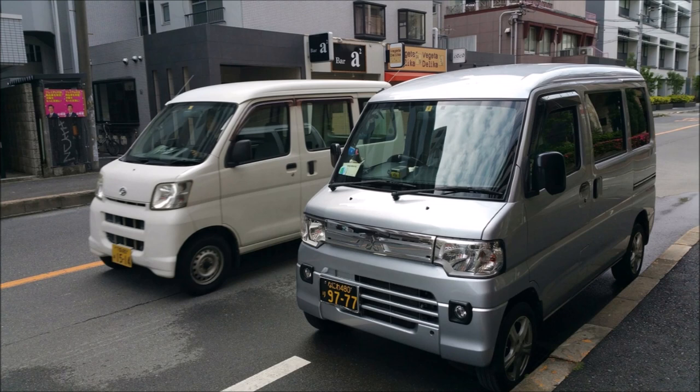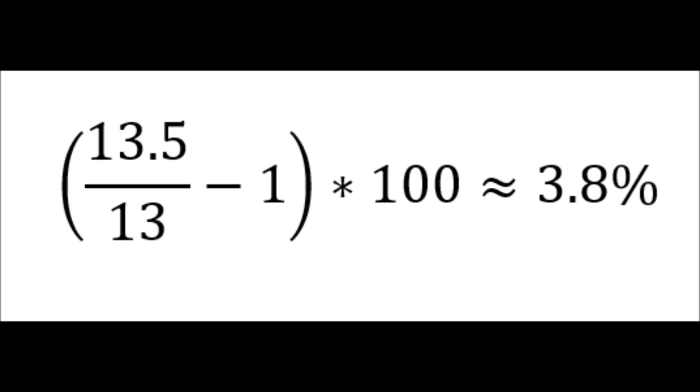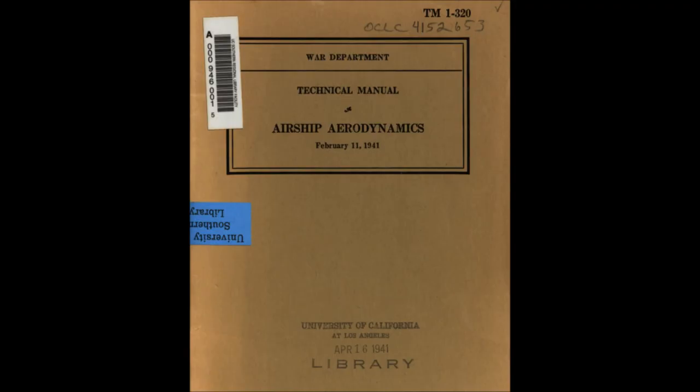And this is quite surprising since we see a lot of cubic cars in Japan. This means that practicality came over energy. Furthermore, we can see that the disc has a value of 13, while the square has a value of approximately 13.5. The ratio is about 3.8%, and this is quite close to the 5% found in the Airship Aerodynamic Technical Manual of 1941.